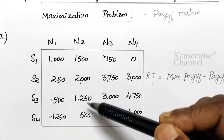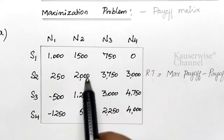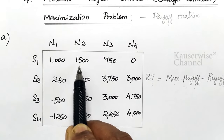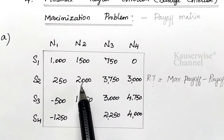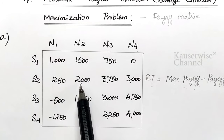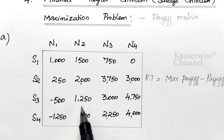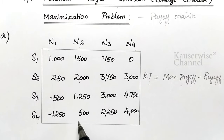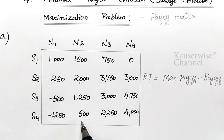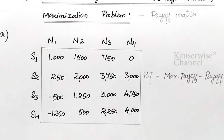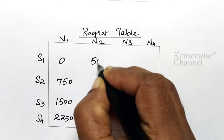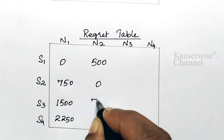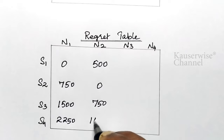For the second column, the maximum value is 2000. So: 2000 minus 1500 equals 500; 2000 minus 2000 equals 0; 2000 minus 1250 equals 750; 2000 minus 500 equals 1500. The regret values for the second event are: 500, 0, 750, 1500.